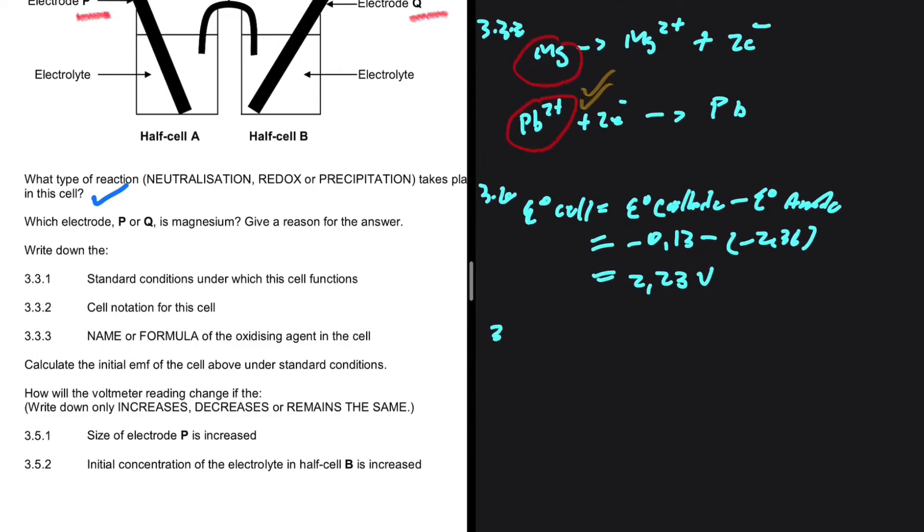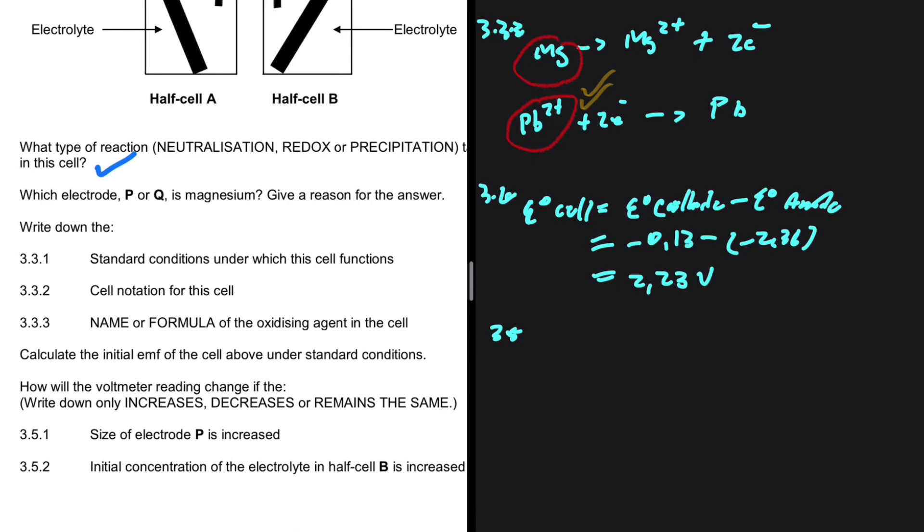The tricky equations, 3.5. How will the voltmeter reading change if the size of electrode P is increased?